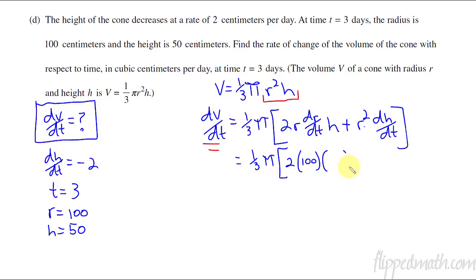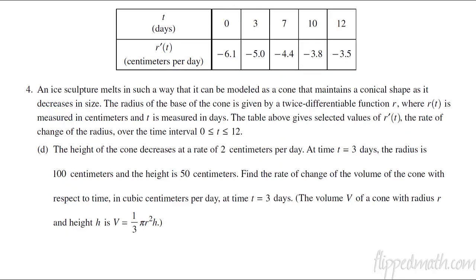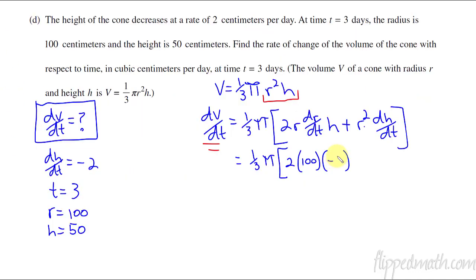At time 3 we have in the table what dr/dt was. r'(t) is dr/dt so it's negative 5. I can go back here and say that that's a negative 5. Then the h was 50 and then I just keep plugging things in. r squared so I have 100 squared. dh/dt was negative 2 and then I'm done.